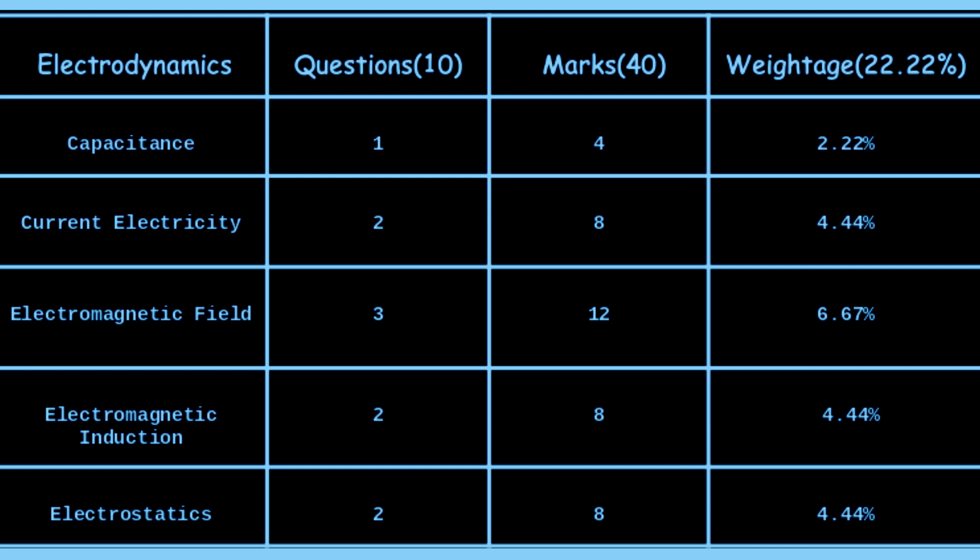The next important topic is electrodynamics, which consists of 10 questions of 40 marks and a weightage of 22.22%. It has: capacitance — one question of four marks; current electricity — two questions of eight marks; electromagnetic field — three questions of 12 marks; electromagnetic induction — two questions of eight marks; electrostatics — two questions of eight marks.